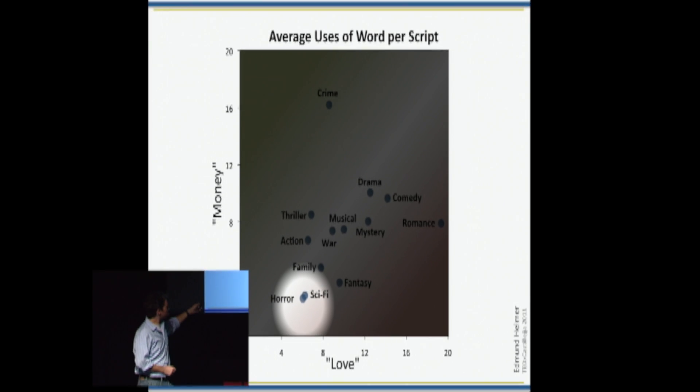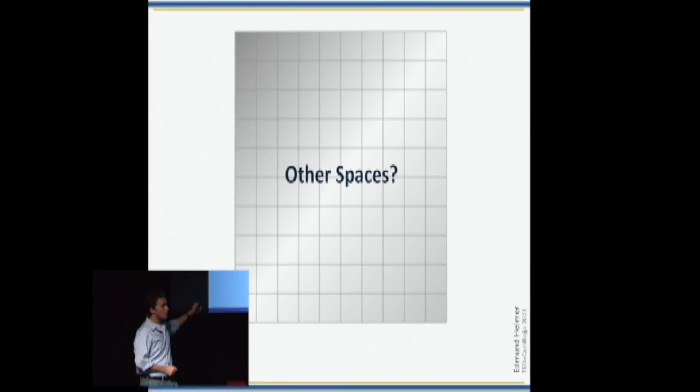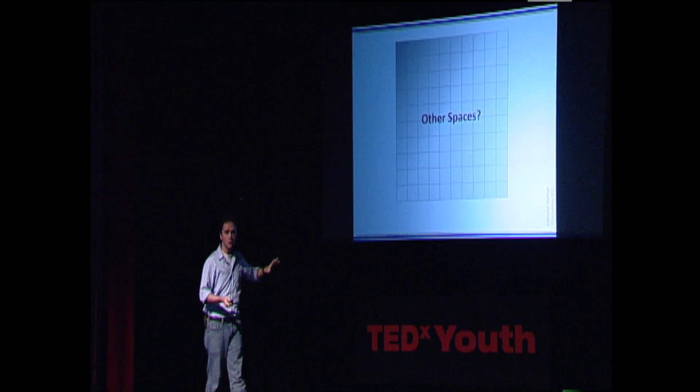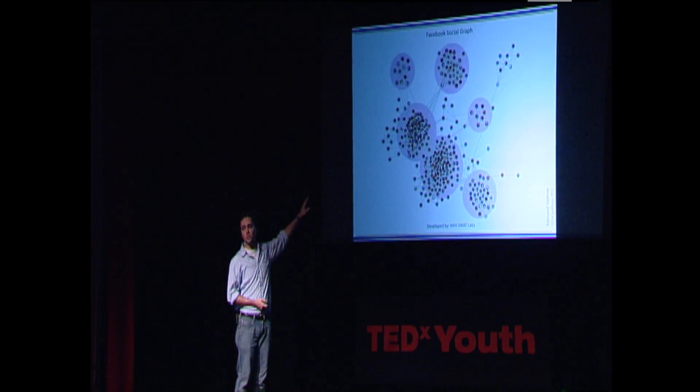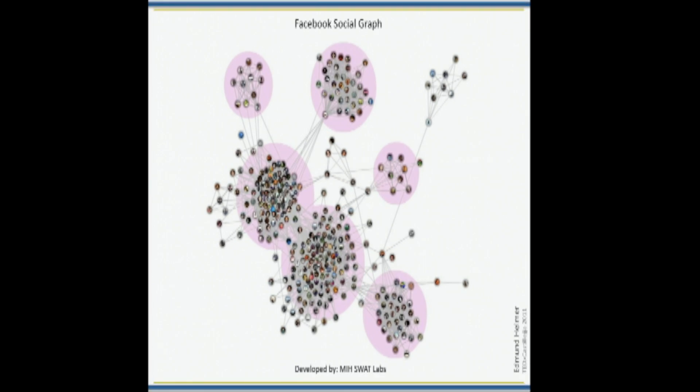So I want you to just to think about other spaces. What else can you put onto a grid like this that would explain part of your everyday experience? And I want to show you one thing that I didn't do. It was developed by MIT SWAT Labs. It's called the Facebook Social Graph. I think it's really cool. You can check it out on Facebook. It's not affiliated with me. I just think it's cool.